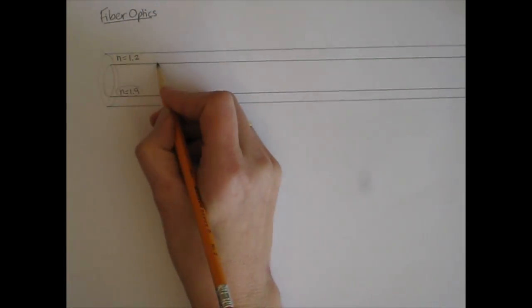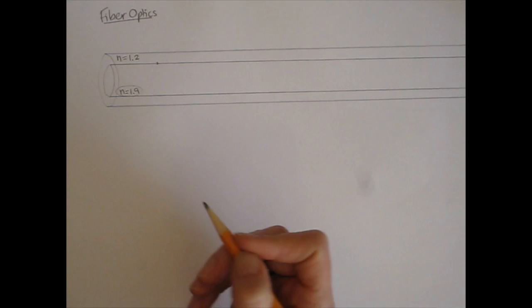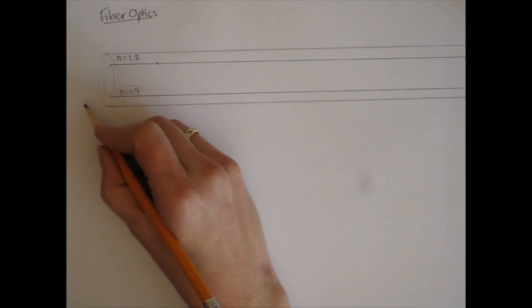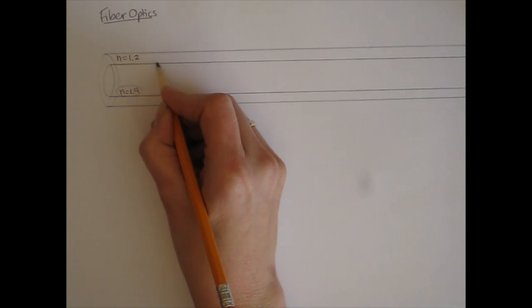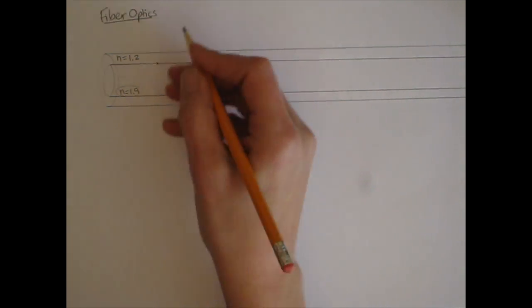So let's see what the critical angle is for this boundary and how this might work. So if my light ray is starting inside here, I want to find the critical angle for this boundary.